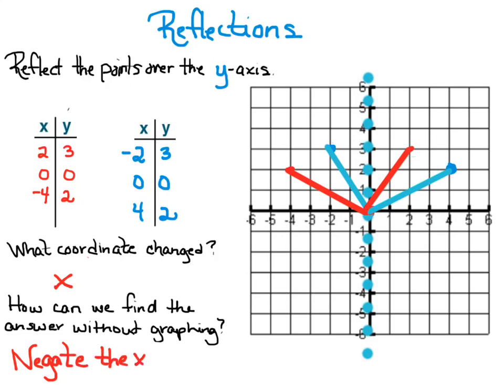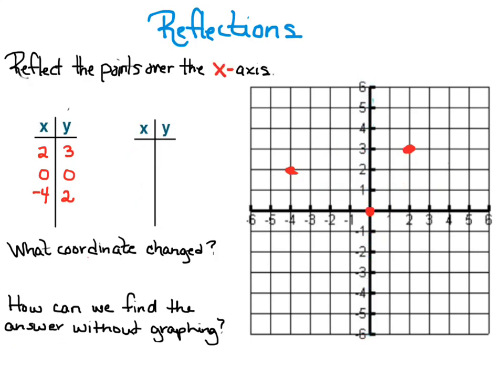Now let's take a look at reflecting the point over the x-axis. So once again I'm going to draw this imaginary folding line on the x-axis and I want to see where those red dots would wind up if I were to paint them and fold it over the x-axis. Where would the reflection image be?